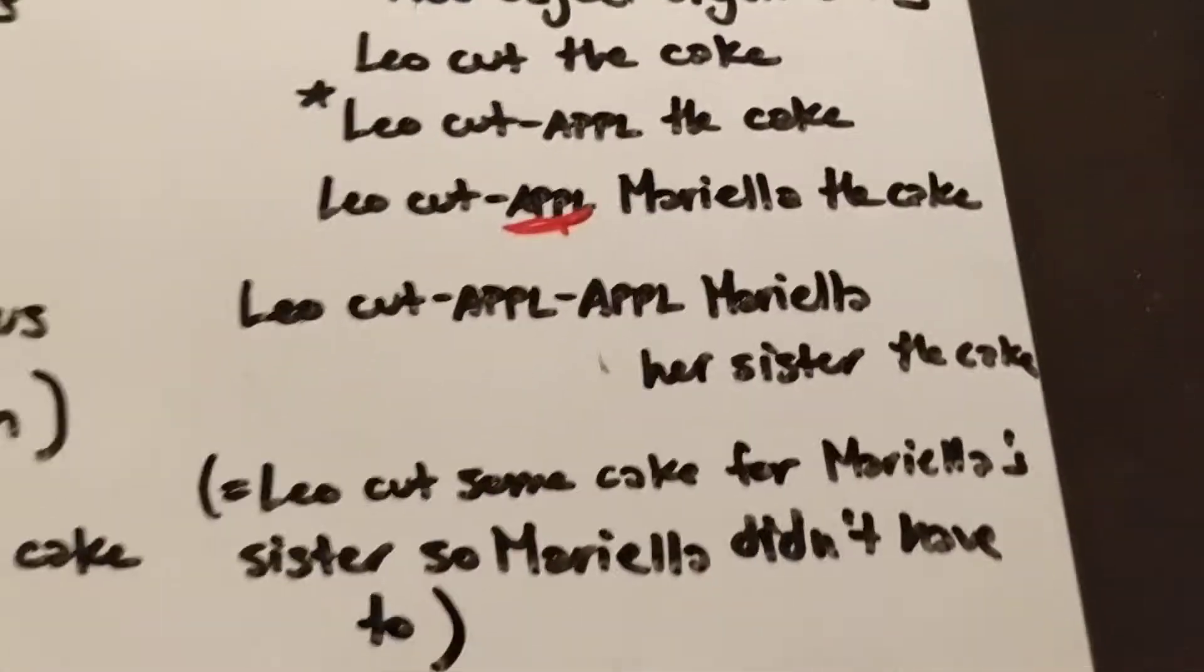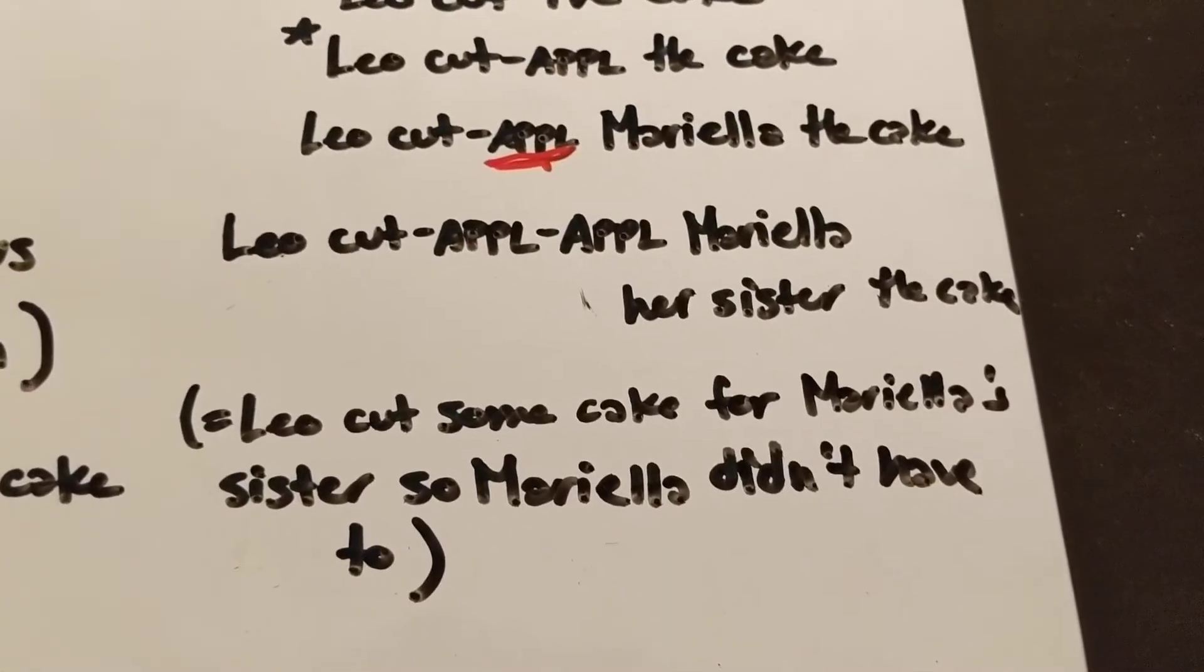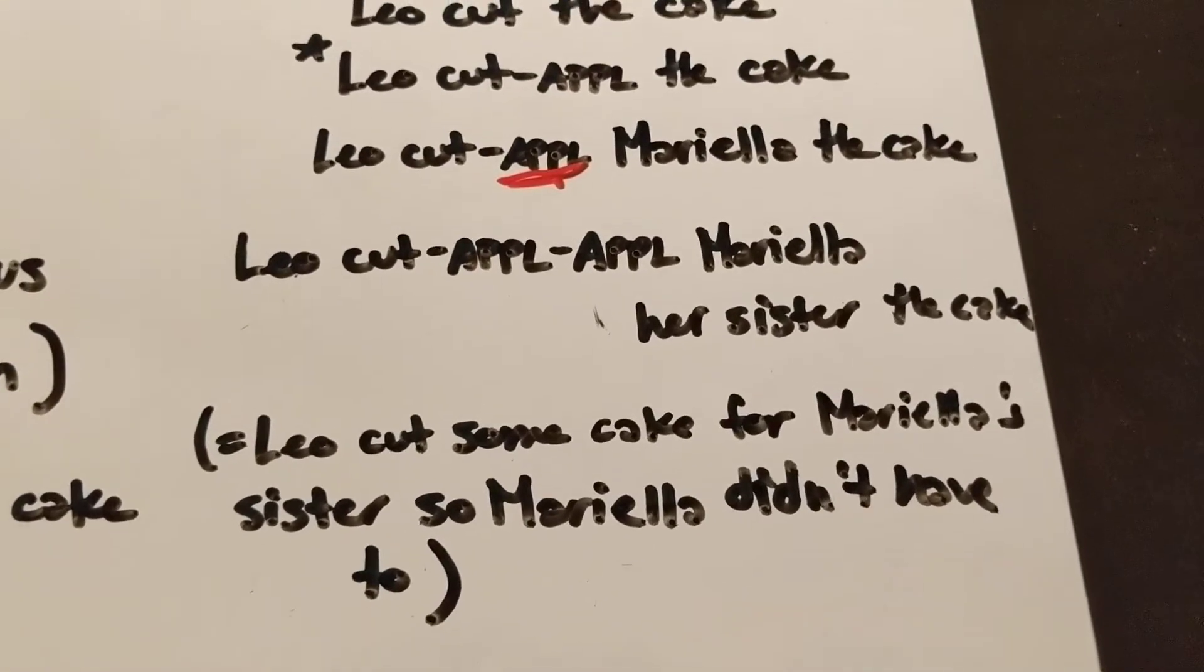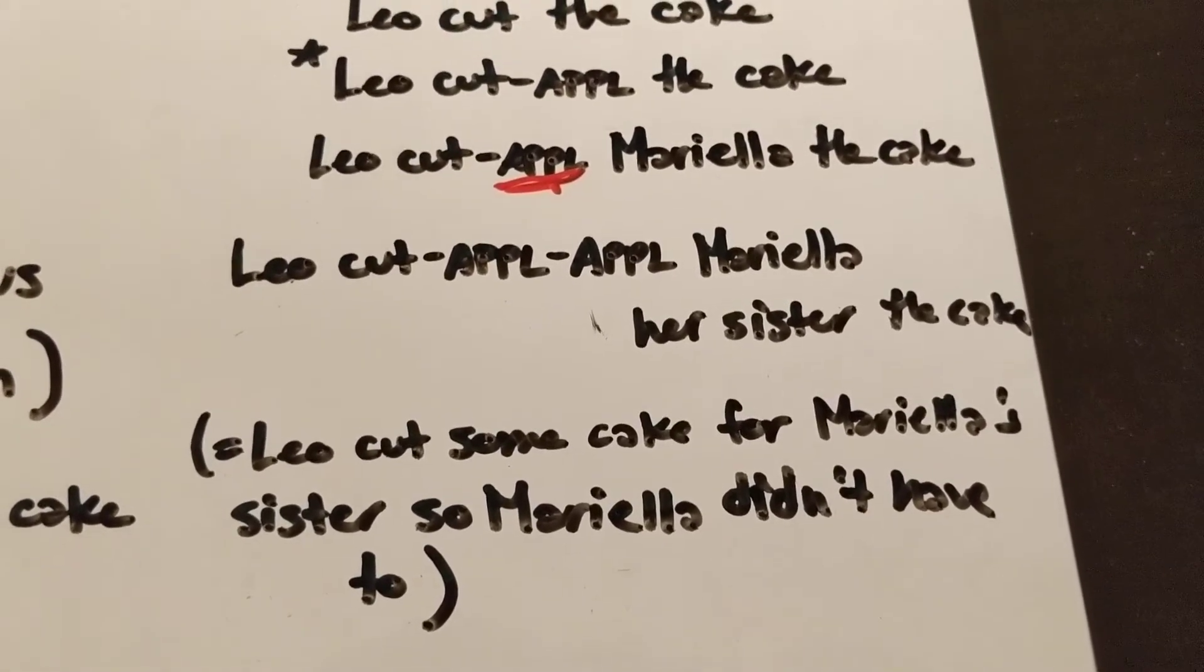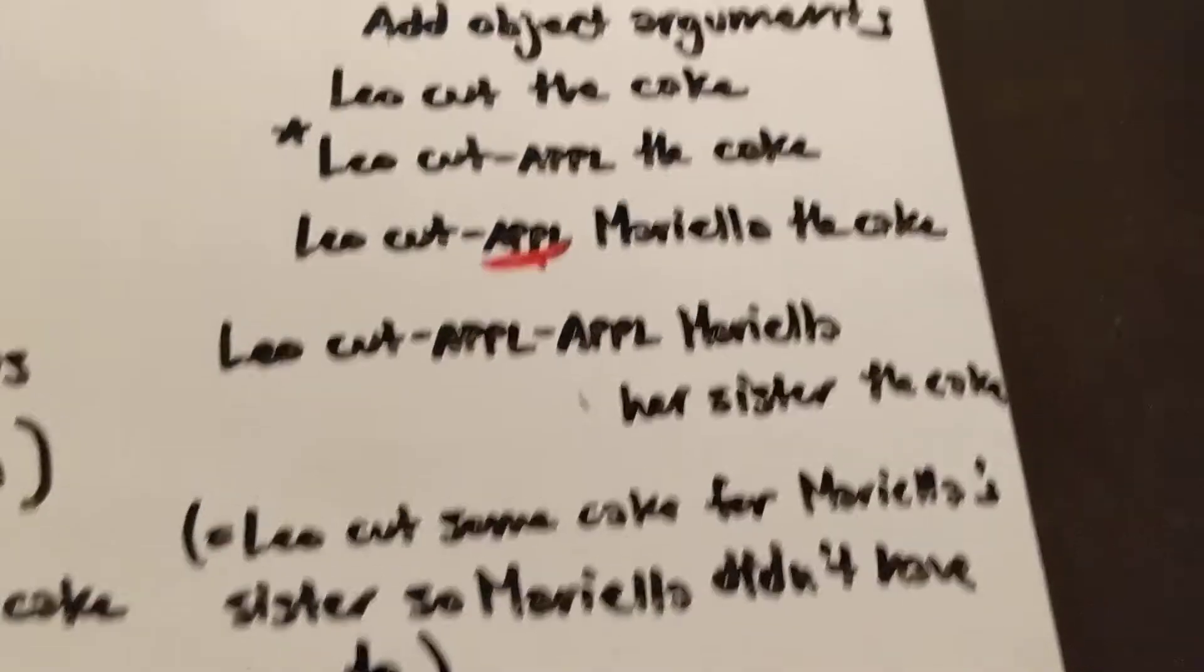Mariela, her sister, the cake, which would mean something like Leo cut some cake for Mariela's sister so that Mariela didn't have to, because Mariela was asleep in her chair or something like that.